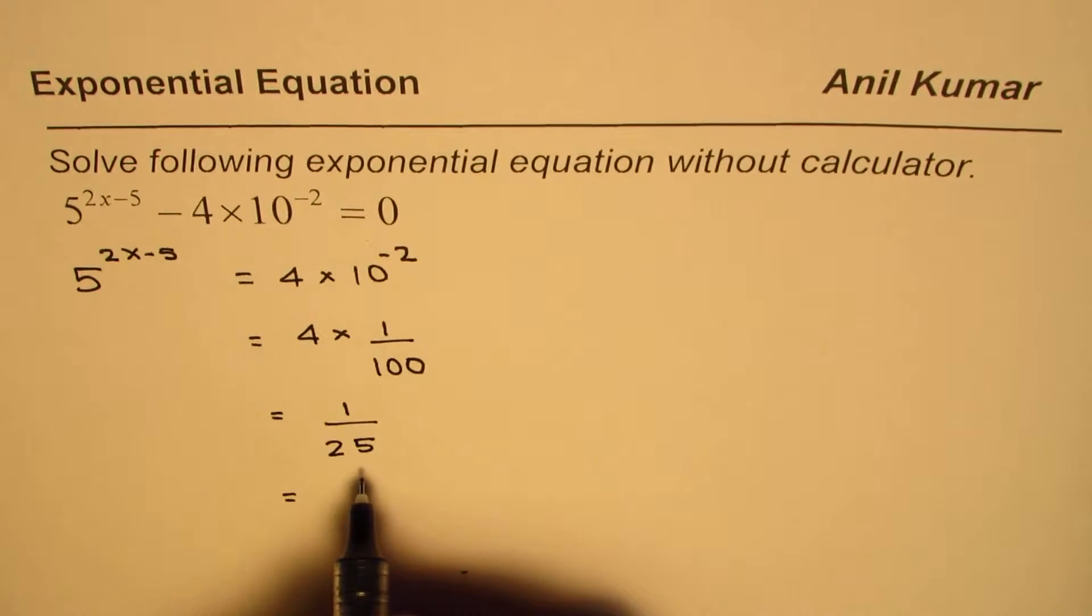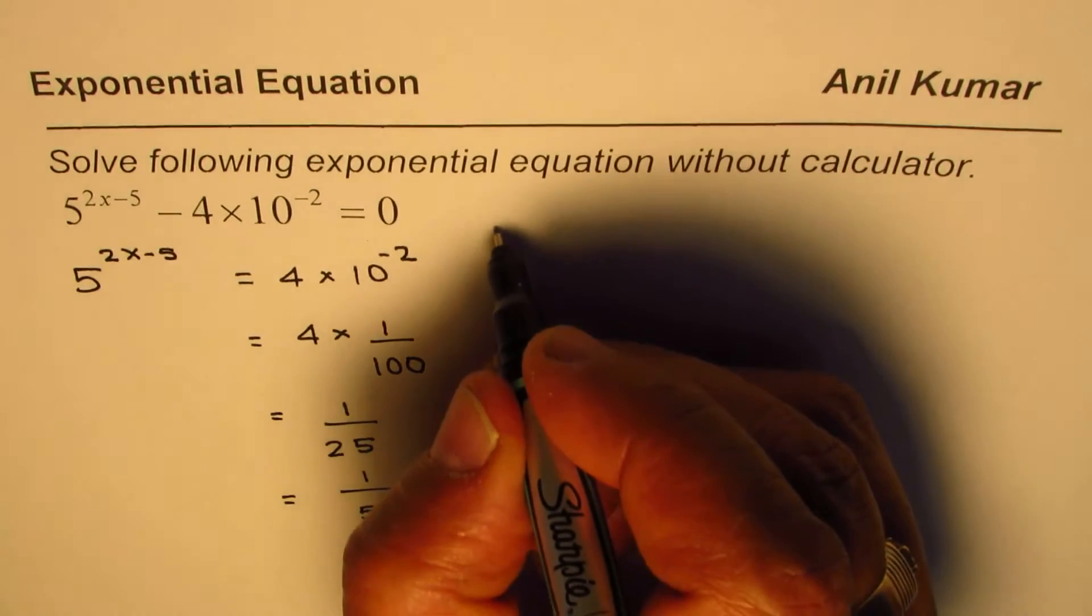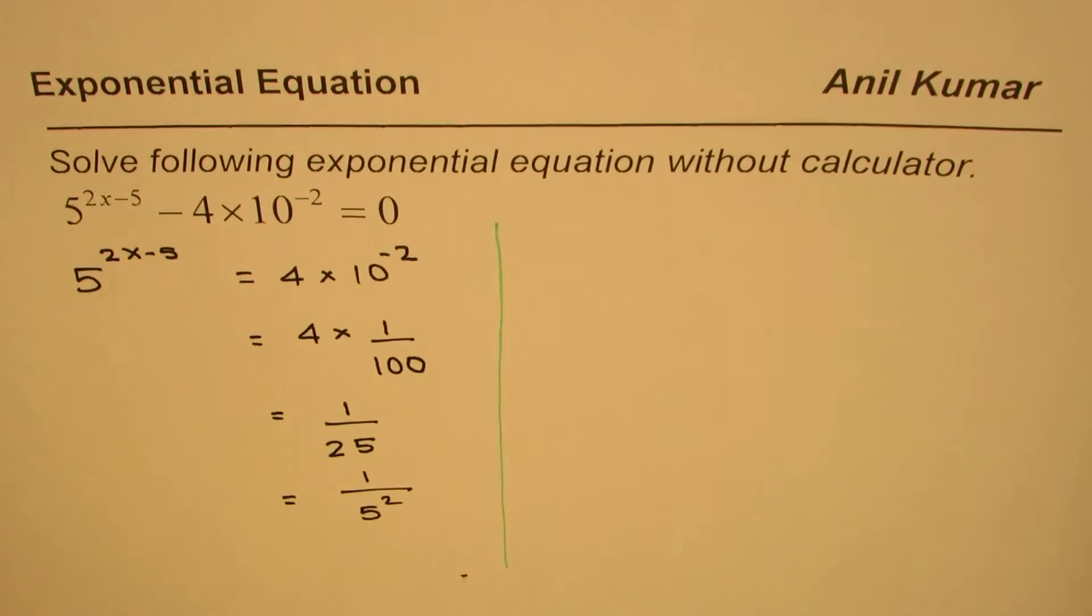Now, 25 can be written as 5 squared, right? So 25 can be written as 5^2. Now I think you can see the solution. So I will now find the solution on the right side of this page.